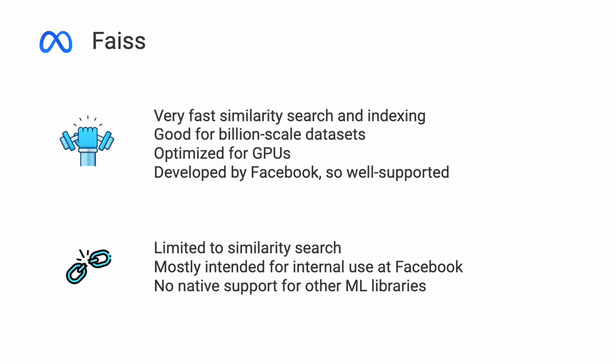FAISS is a Facebook-created, or Meta-created, database. Since it's purpose-built for similarity search and indexing, it's extremely fast. Those are the strengths FAISS has — similarity search and indexing. It's great for large, billion-scale datasets. It's optimized for GPUs, and it's well-supported by its parent company.